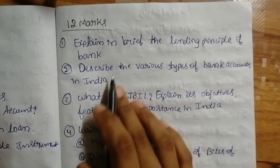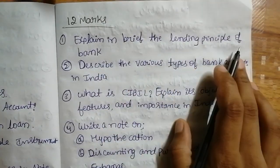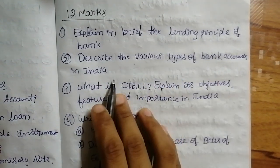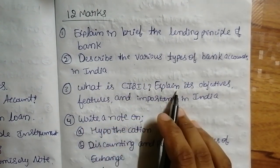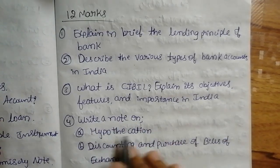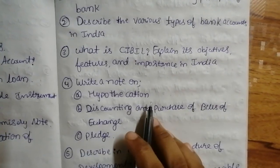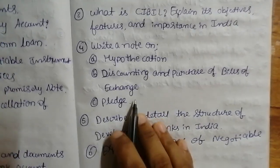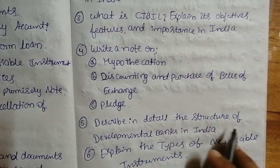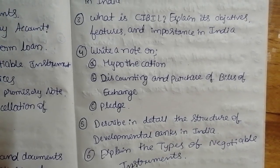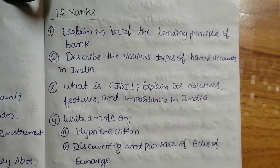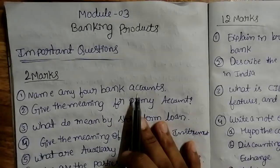Next we have 12-mark questions: Explain in brief the lending principles of a bank. Describe the various types of bank accounts in India. What is a bill — explain its objectives, features, and importance in India. Write a note on hypothecation, discounting, and purchase of bills of exchange. Describe in detail the structure of development banks in India. Explain the types of negotiable instruments. These are the 12-mark questions related to Module 3 Banking Products.